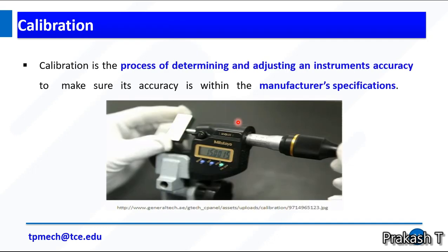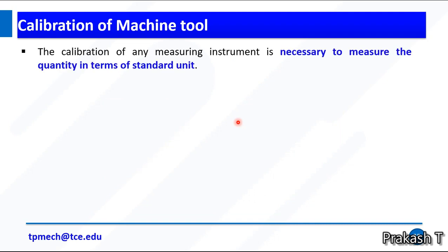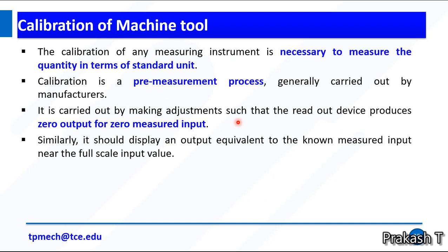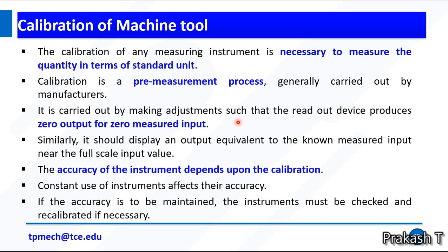Calibration: calibration is the process of determining and adjusting an instrument's accuracy to make sure that its accuracy is within the manufacturer specifications. The calibration of any measuring instrument is necessary to measure the quantity in terms of standard units. It is a pre-measurement process generally carried out by manufacturers. It is carried out by making adjustments such that the readout device produces zero output for zero measured input. Similarly, it should display an output equivalent to the known measured input near the full scale input value. The accuracy of the instrument depends upon calibration. Constant use of instruments affects their accuracy. If the accuracy is to be maintained, the instrument must be checked and recalibrated if necessary.